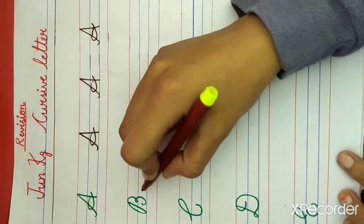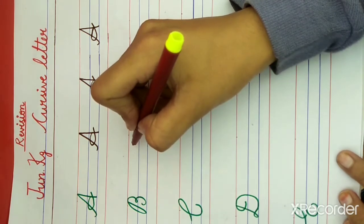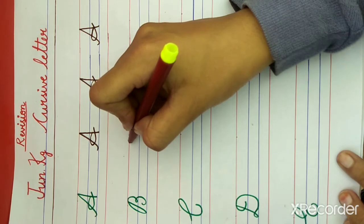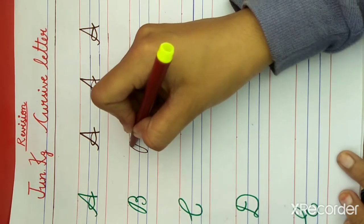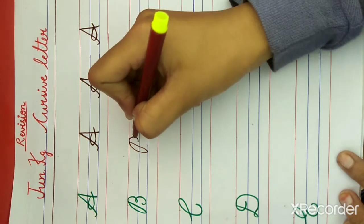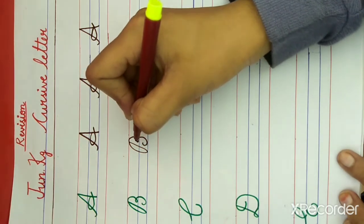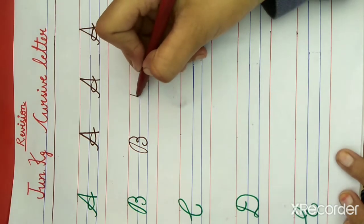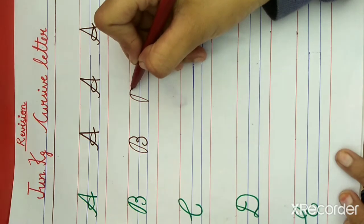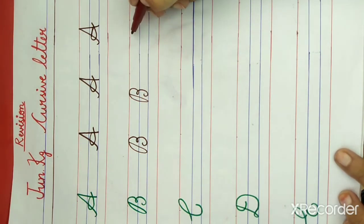Now what is this? This is letter B. B for ball. What is the spelling of ball? B-A-L-L. Now draw: put your pencil on the red line and draw a slanting line, one more slanting line, a curve, a small loop, and stop here. What is this? This is letter B. B for ball. What is the spelling of ball? B-A-L-L.